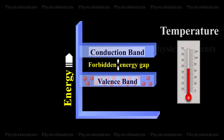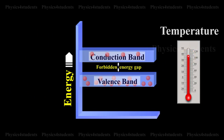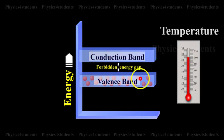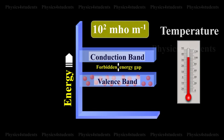For example, if the temperature is raised, the forbidden gap is decreased and some electrons are liberated into the conduction band. The conductivity of a semiconductor is of the order of 10 raised to 2 mho per meter.